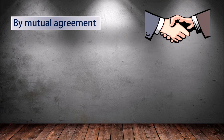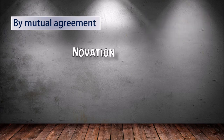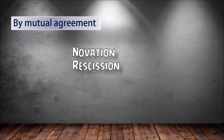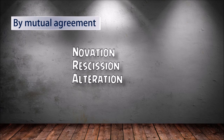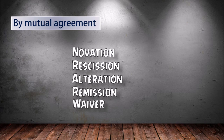Discharge of contract by mutual agreement: a contract may be terminated by mutual consent in any of the following ways. Novation means a new contract is entered in place of the old or original contract. Rescission means cancellation of the contract by any or all parties. Alteration means a change in one or more terms of the contract with mutual consent. Remission means accepting a lesser consideration than agreed.